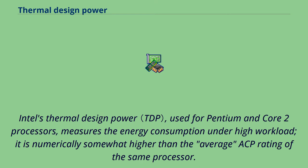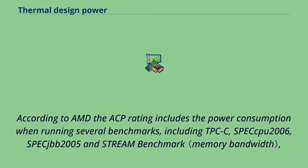Intel's thermal design power, used for Pentium and Core 2 processors, measures the energy consumption under high workload. It is numerically somewhat higher than the average ACP rating of the same processor.